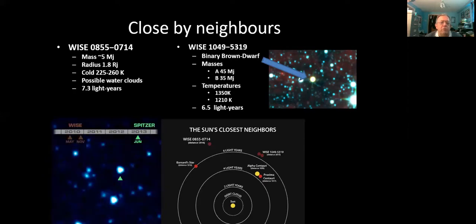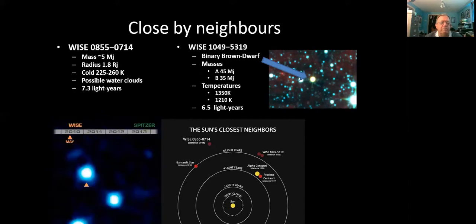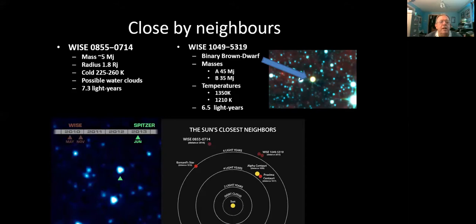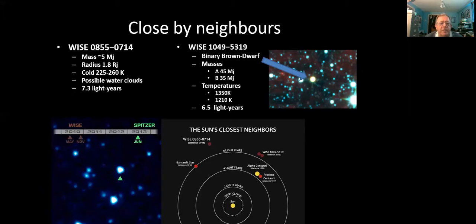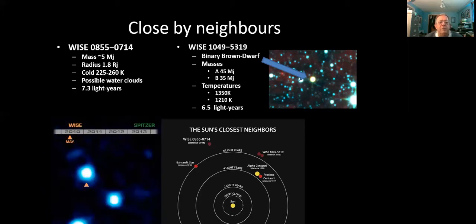Fairly cold, 250 degrees Kelvin. So hotter than Jupiter, that's 125. And so it's definitely quite a big object. A certain amount of trapped heat in the center still. And it's fairly nearby, 7.3 light years away.